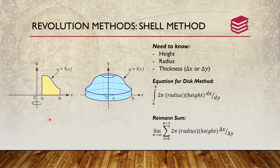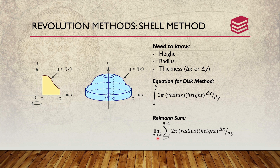The last method is the shell method. You have y = f(x), and this is the area that revolves around the y-axis. There is a cylinder in the center that is essentially empty. You need to know the height, the radius, and the thickness — either delta x or delta y. The equation is different from the disk and washer: it's 2π times the radius times the height times the thickness (dx or dy), set up in this integral. The Riemann sum is set up with this limit.